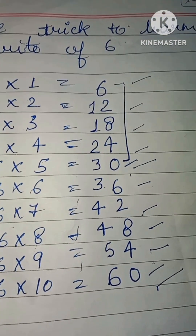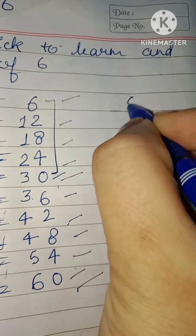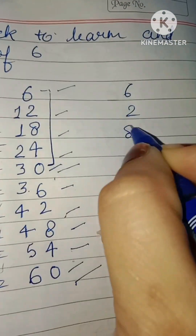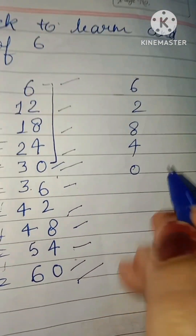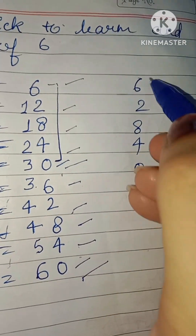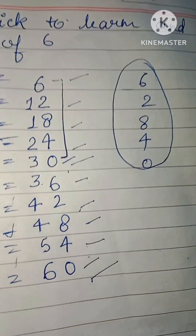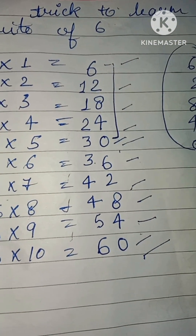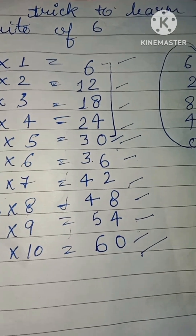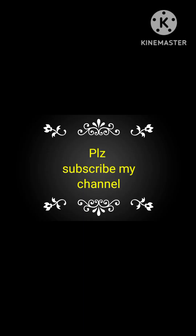Hope all students have learned this table very easily. You only have to learn six, two, eight, four, zero — these five numbers — and you can learn the table of six very easily. Hope you like my videos. If you like my videos, please subscribe to my channel. Bye bye!